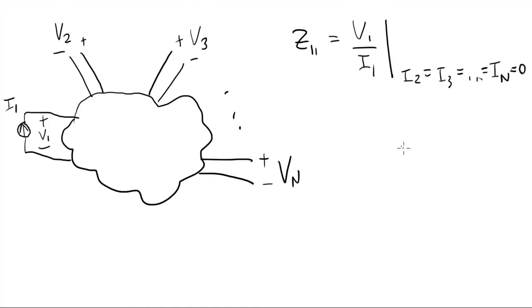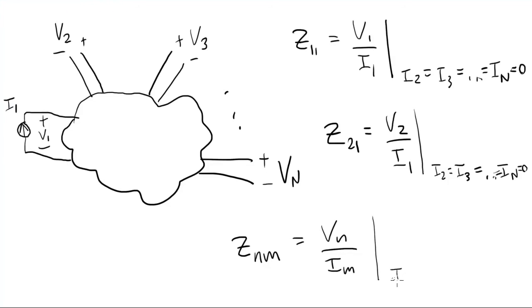So conceptually, we've got a test current attached to port 1. We can also solve for Z21, which is the voltage at port 2 divided by the current into port 1, with no current going into any other ports. So you can see that for a given test current, you can get a column of the Z matrix.